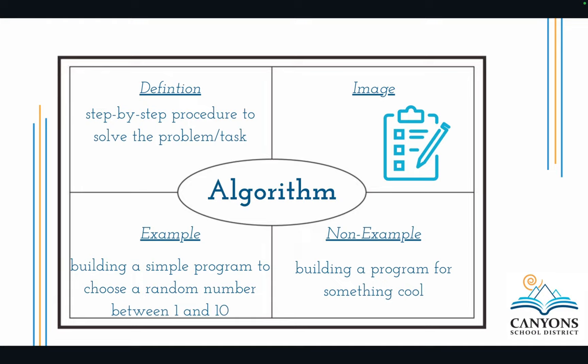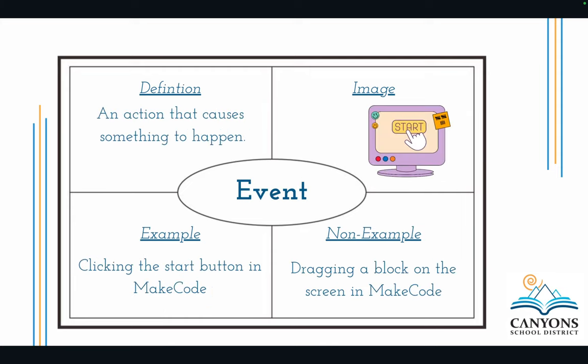An algorithm is those step-by-step procedures, like building a simple program to choose a number one through ten. An event is the action that forces something to happen — that could be a click, a shake, whatever that action is.